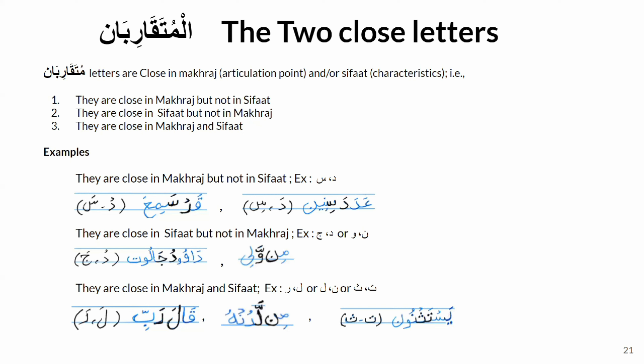Bismillah, alhamdulillah, assalatu wassalamu ala rasulillah. Assalamu alaikum warahmatullahi wabarakatuhu. As we continue the topic of the relationship of two letters when they meet each other in writing and pronunciation, today inshallah we will discuss the next category of letters, which is called al-mutaqariban letters — the two close letters.